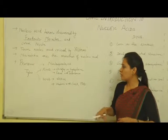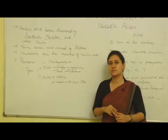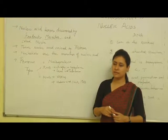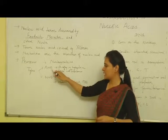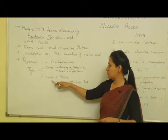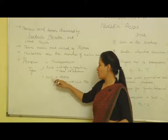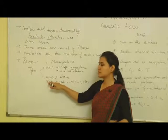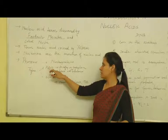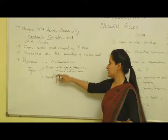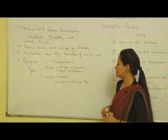Mainly, there are two types of nucleic acids: RNA and DNA. RNA stands for ribonucleic acid, whereas DNA stands for deoxyribonucleic acid. The prefix 'deoxy' is used because oxygen is not present in the deoxyribose sugar of DNA, whereas oxygen is present in the ribose sugar of RNA.